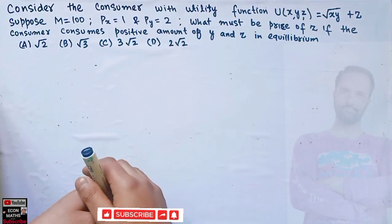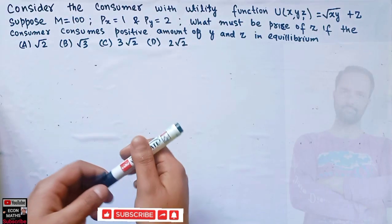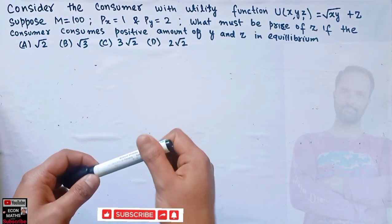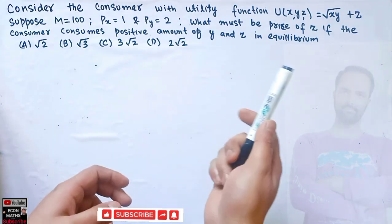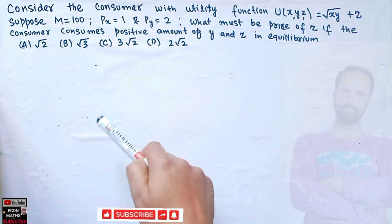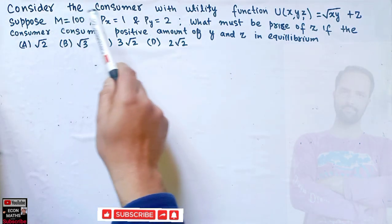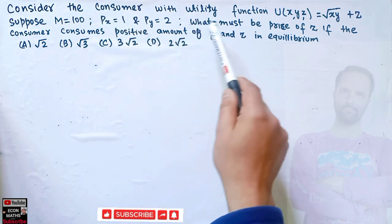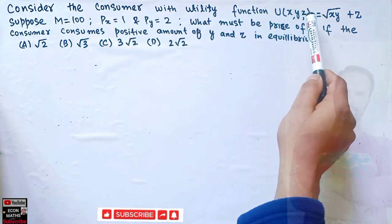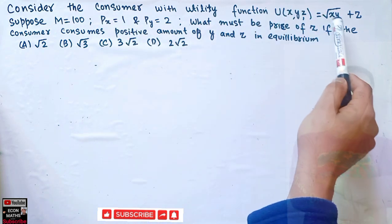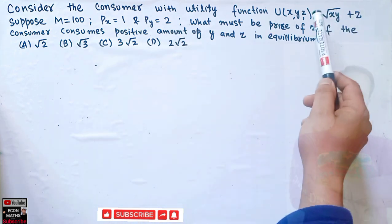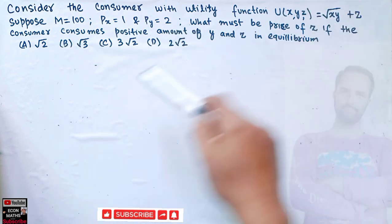In this video we will try to solve a problem asked by a brother on the Telegram channel of Econ Methods regarding utility maximization in case of three goods. The question is: consider the consumer with utility function U(x,y,z) = √(xy) + z, where x, y, z are the three goods.